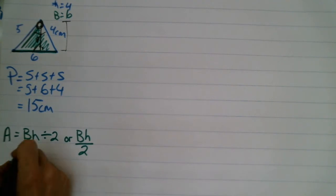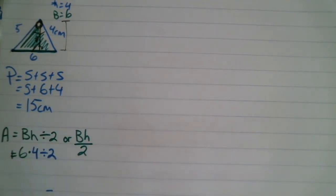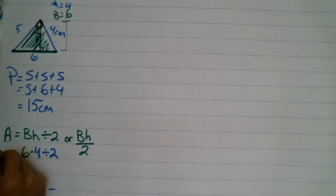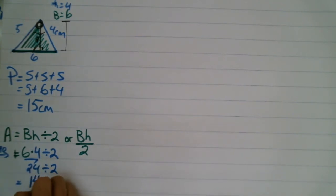Base times height, 6 times 4, divided by 2. Order of operations, what do I do first? Multiplication, division, as they occur from left to right. 6 times 4, 24, divided by 2. 24 divided by 2 gives me 14 centimeters.